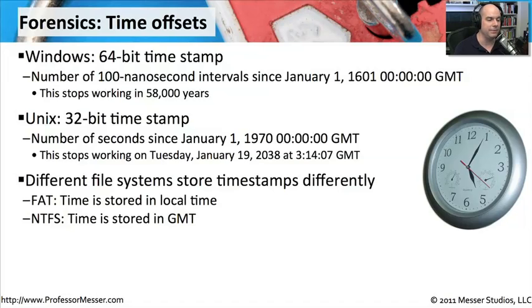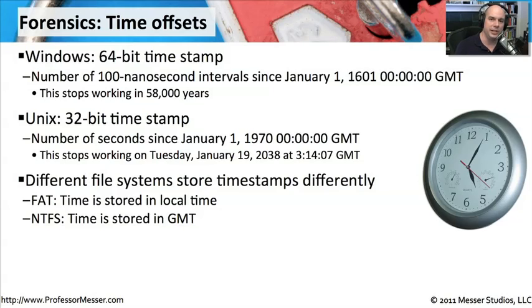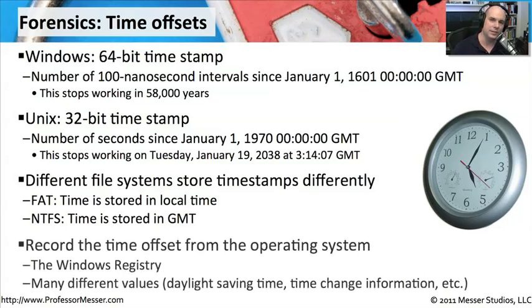Different file systems store timestamps differently. In the File Allocation Table — the FAT file system — time is stored in local time. Whatever the local time is on your computer, if it's 5 in the afternoon your time, it stores it as 5 in the afternoon. If you're using NTFS, the time is stored as GMT, and your operating system converts the time on the fly to show you your local time. But the actual timestamp of the file is in GMT — that's important to keep track of from a forensics perspective.